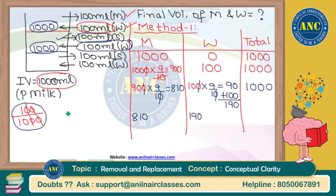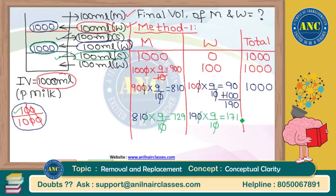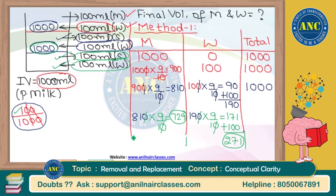In step 5, we take out 100 ml of solution from 1000 ml — again 1/10 removed, 9/10 remains. So milk becomes 9/10 of 810 = 729 ml, and water becomes 9/10 of 190 = 171 ml. In step 6, we add 100 ml of water: 171 + 100 = 271 ml water. Final volume: 729 ml milk and 271 ml water, and 729 + 271 = 1000 total.